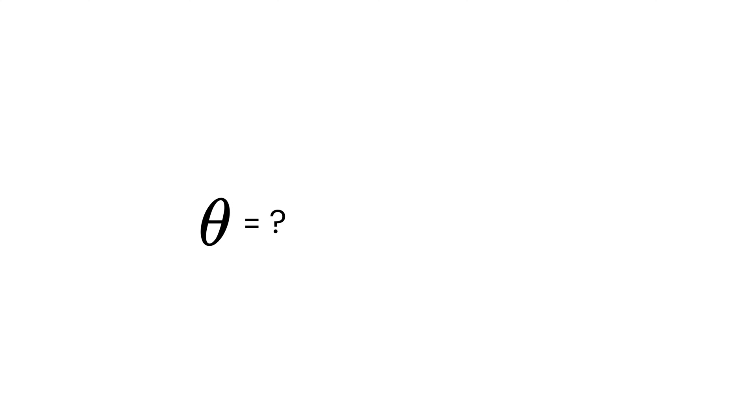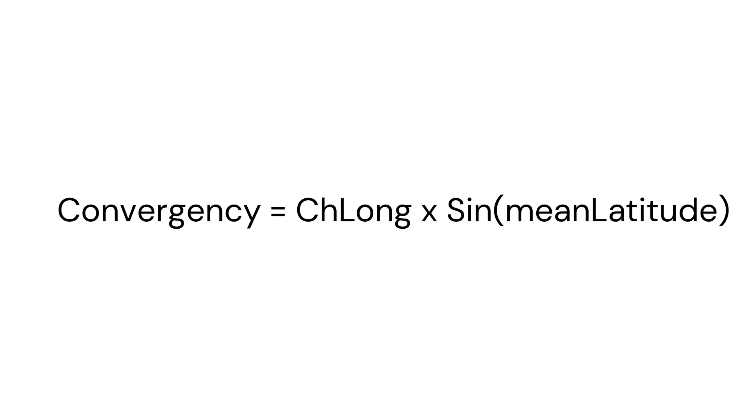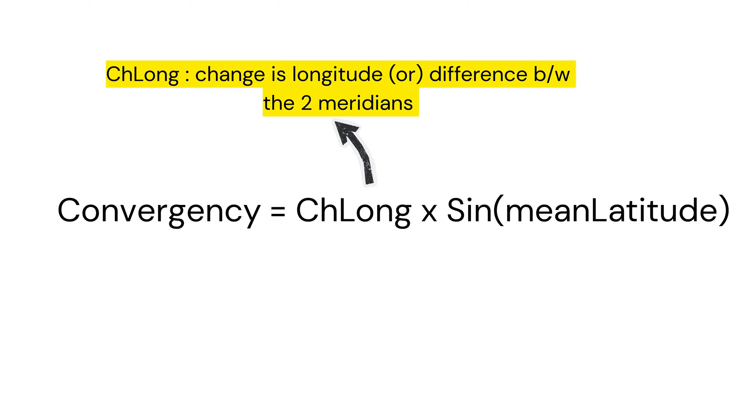So how do you find convergency? The formula for calculating convergency is ChLong times sin mean latitude, where ChLong is the change in longitude or the difference between the two meridians. Mean latitude is the average latitude of the two positions.